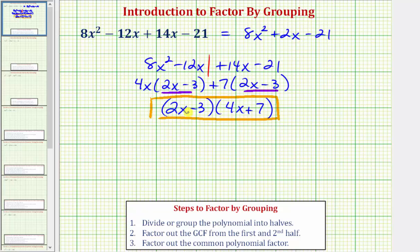If we want, we can check this by multiplying this out. So I'd have the quantity 2x minus 3 times the quantity 4x plus 7. We'll have four products. We distribute the 2x first, then we distribute negative 3.